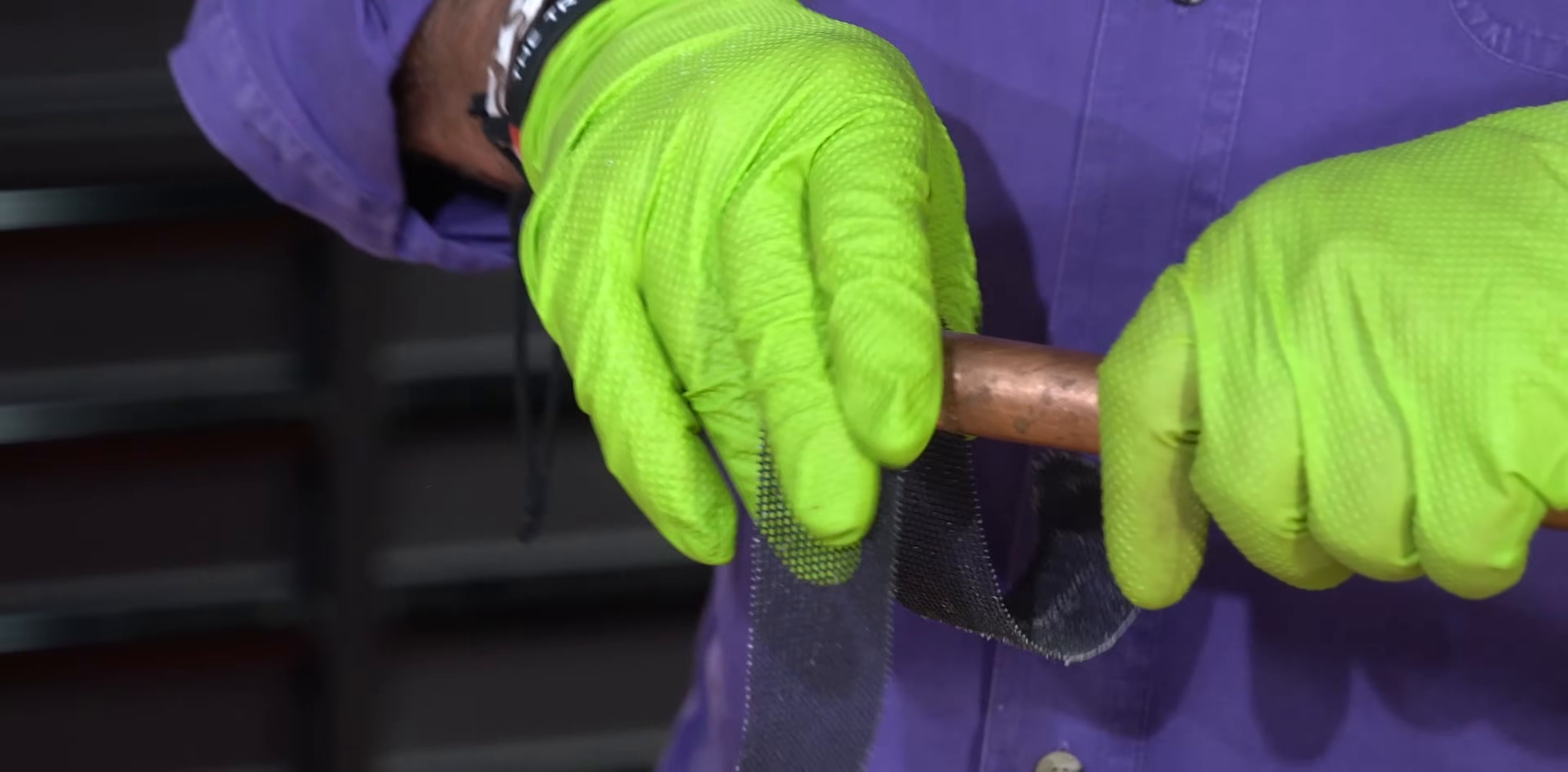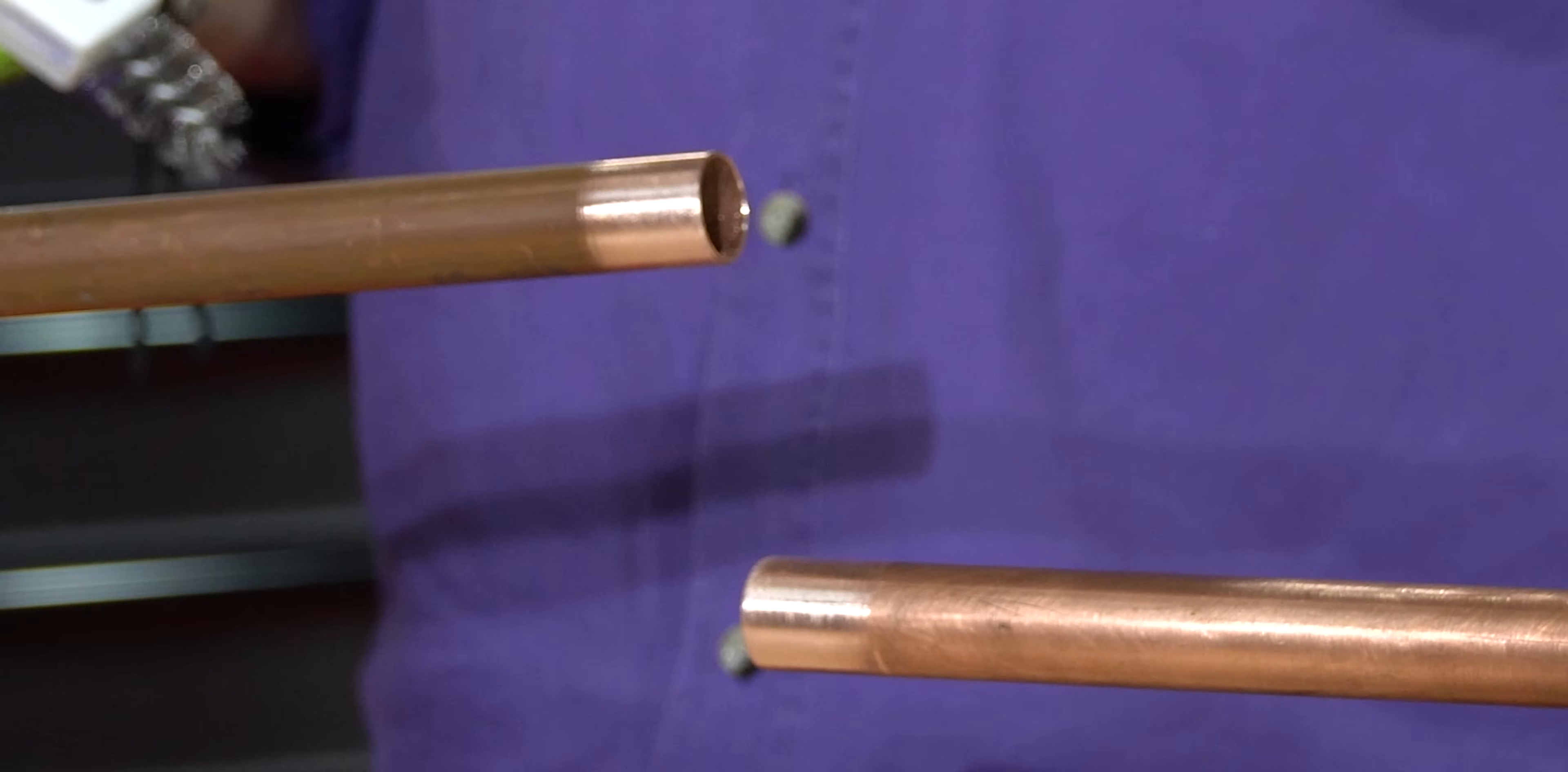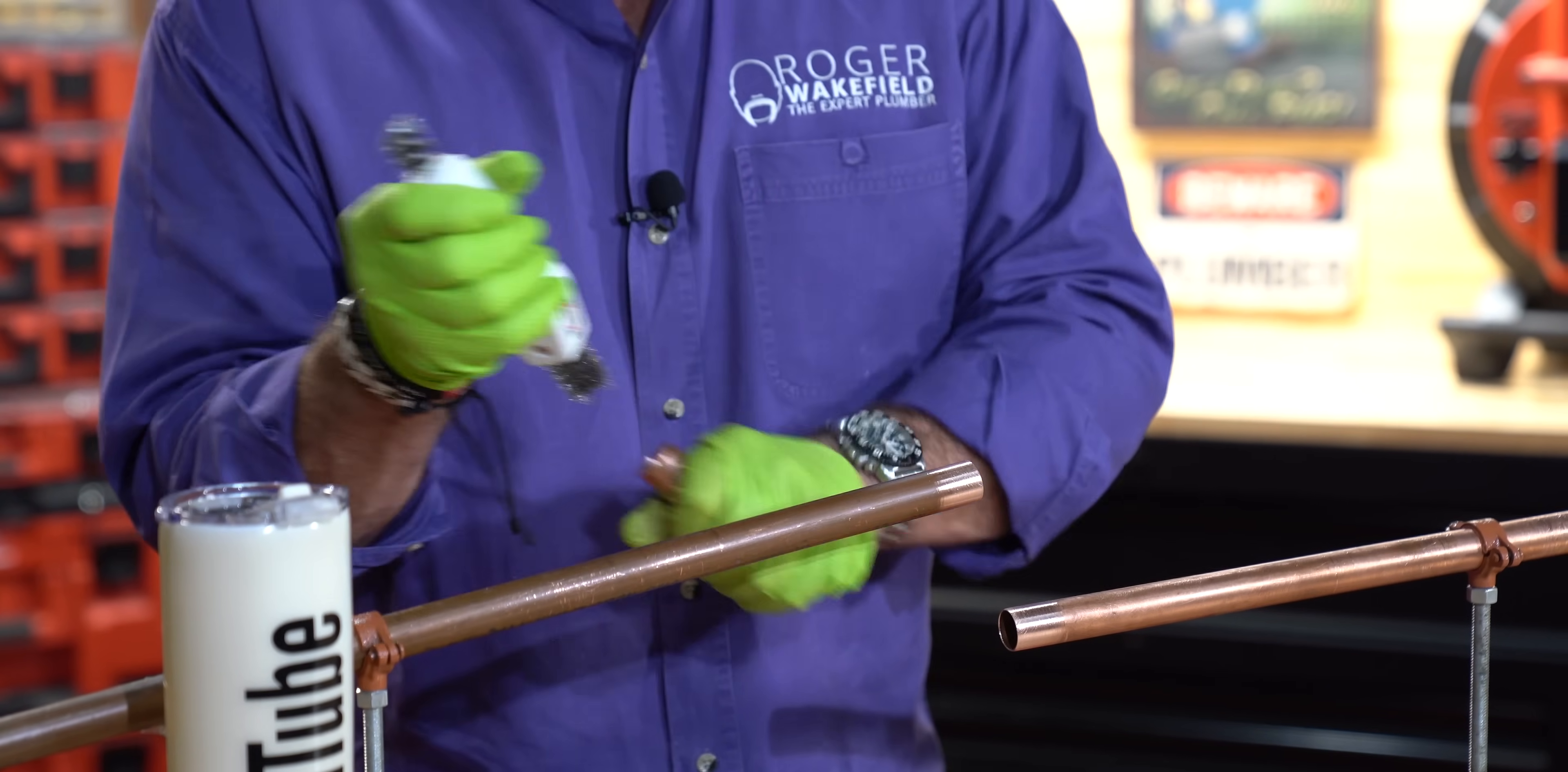If you're old school, open mesh cloth works great. So I've got my pipe right where I want it. Now I'm going to clean the inside of the fitting out. Again, a good fitting brush makes your job so much easier.